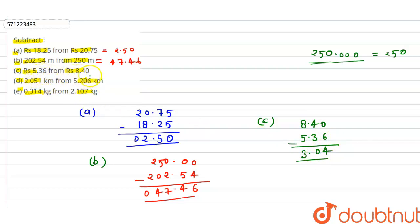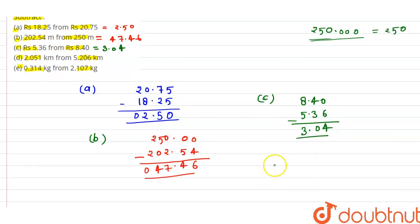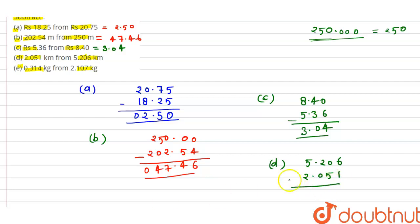For part D, we have to subtract 2.051 from 5.206. Subtracting digit by digit: 6 minus 1 is 5; we cannot subtract 5 from 0, so we take a carry — 10 minus 5 is 5; remaining 1 minus 0 is 1; after the decimal, 5 minus 2 is 3. So 5.206 minus 2.051 equals 3.155.